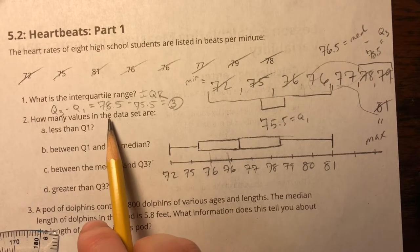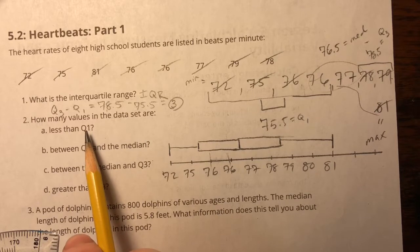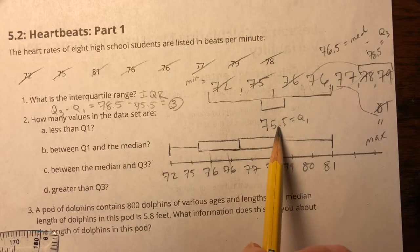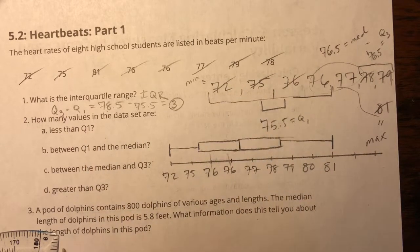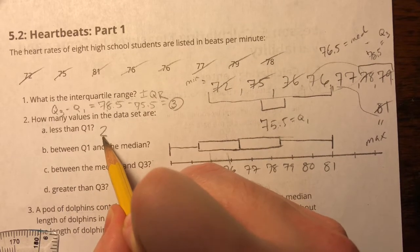How many values in the data set are less than Q1? Well, if Q1 is 75.5, then I've got one, two, two values less than Q1.